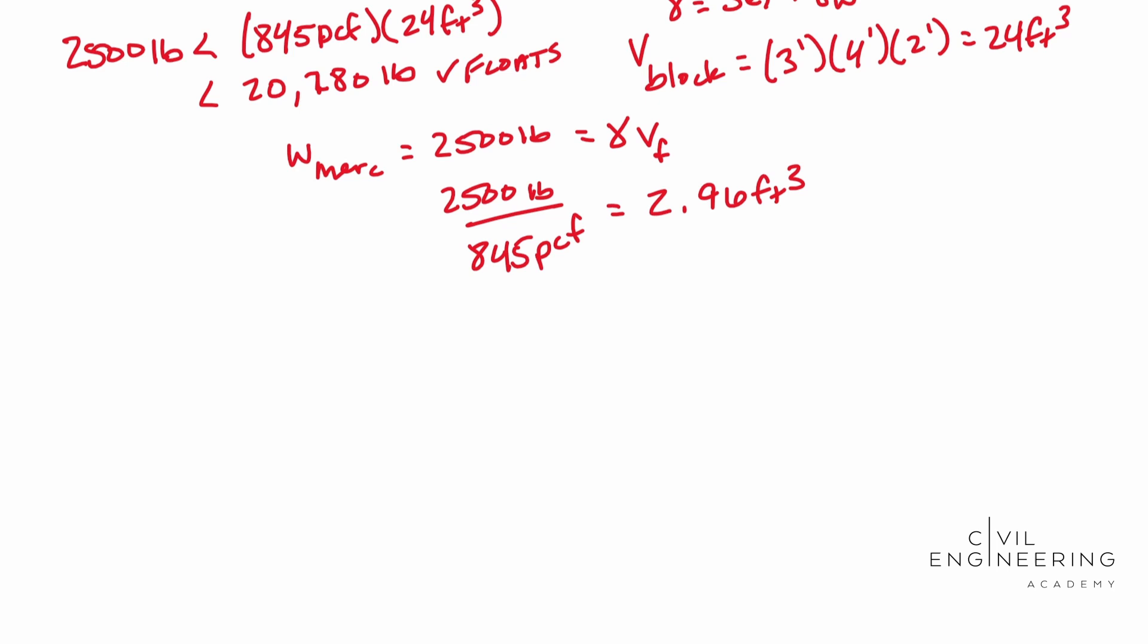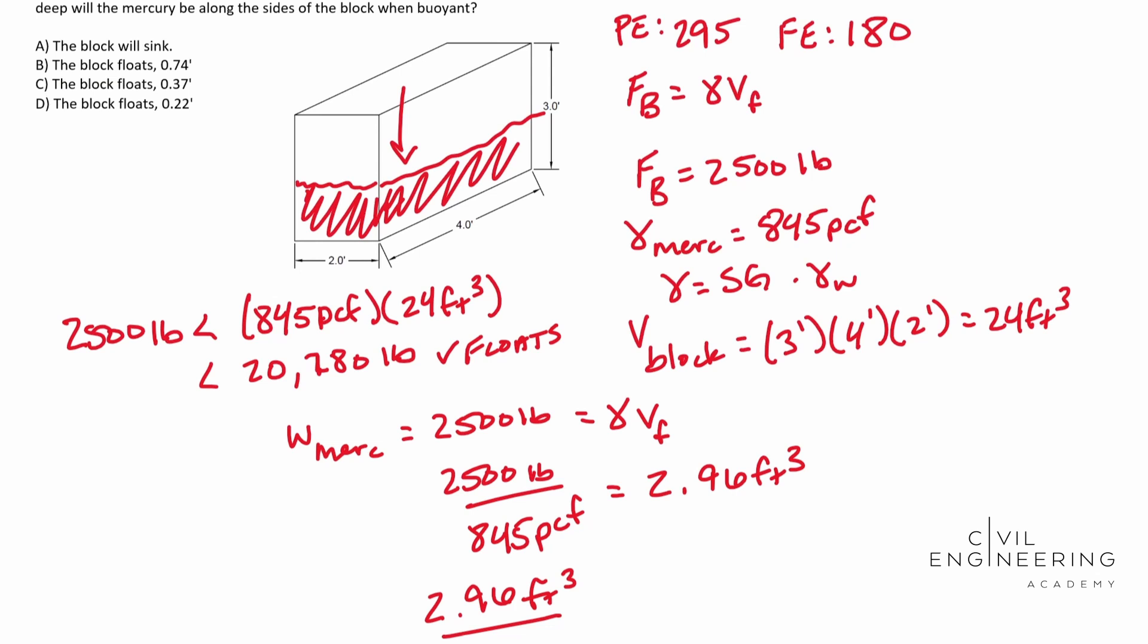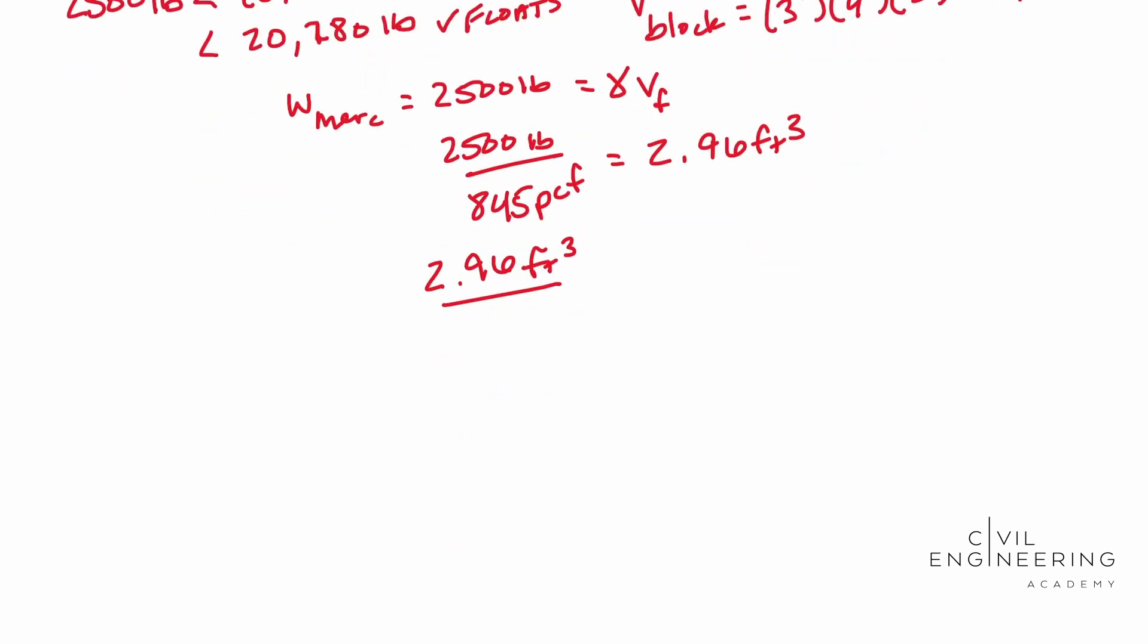And so now we have our volume. Well, how do we get the height out of this? Well, you can divide by your cross sectional area and get a height out of it. And so that's what we're going to do. We're going to go 2.96 feet cubed. And we're going to divide it by the cross sectional area of that. So since we are solving for the height, which is this, we're not going to use it. We're going to use the cross sectional area that impacts that in order to make a volume. So we're looking for this area right here. So that's what we're going to do. This is four feet times two feet. And so you end up with 0.37 feet.